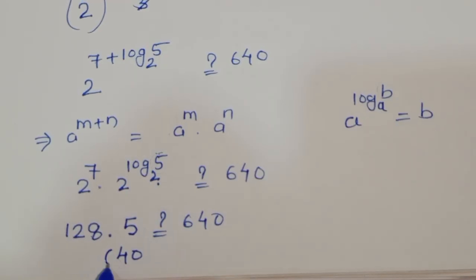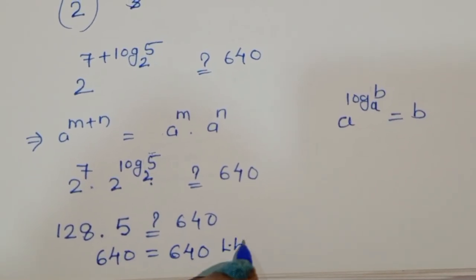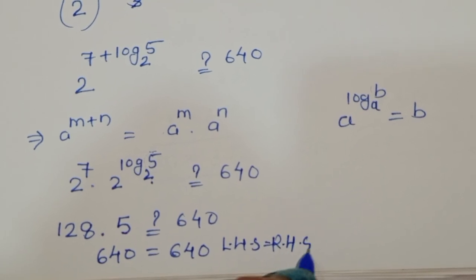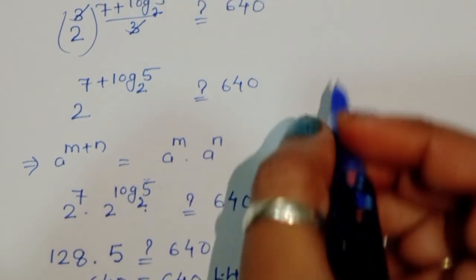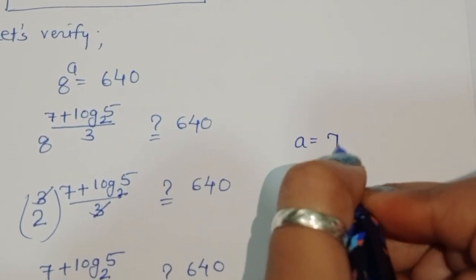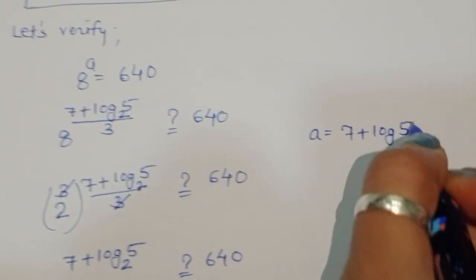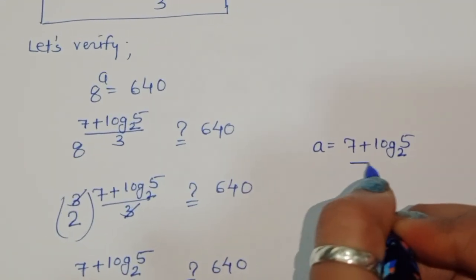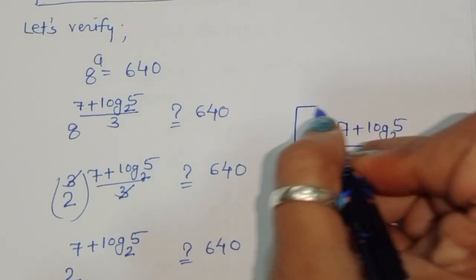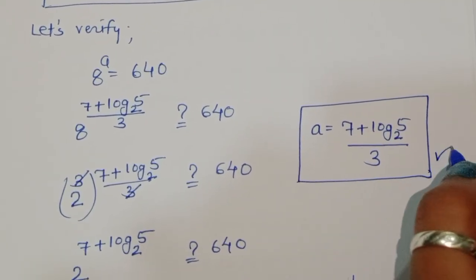128 times 5 equals 640, which equals 640. So LHS equals RHS. Therefore the value of a is equal to (7 + log₂ 5) divided by 3. This is the correct solution for this equation.